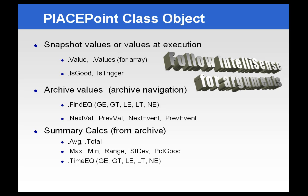The PI ACE point class object contains a lot of the functions that we are familiar with when dealing with tags. For example, current value, is good, is trigger — these are all functions you can get at the time of execution. We have archive value functions, and you may recognize many of these from performance equations. The summary calculations can also expose themselves as performance equations or in process book datasets — averages, mins, max, percent good, as well as the standard time functions.